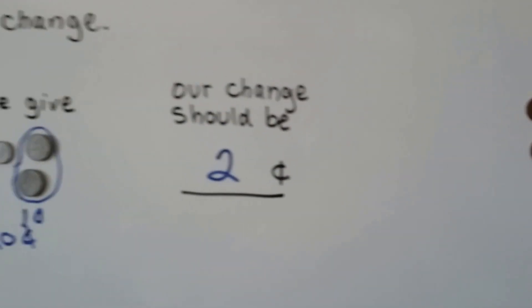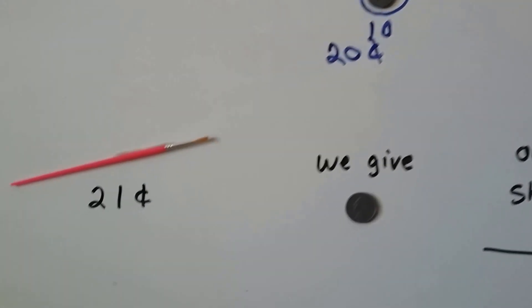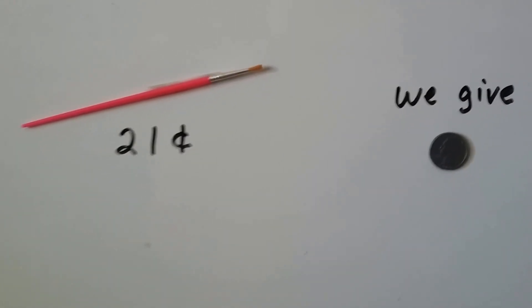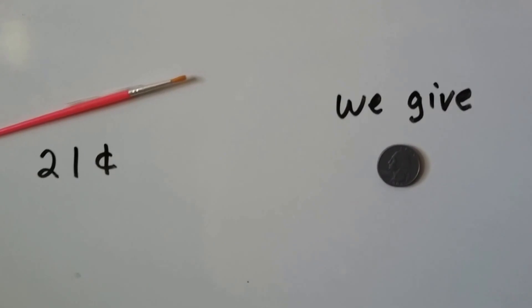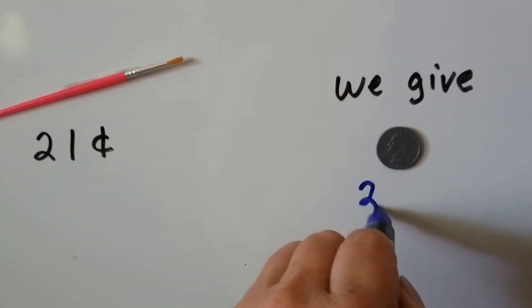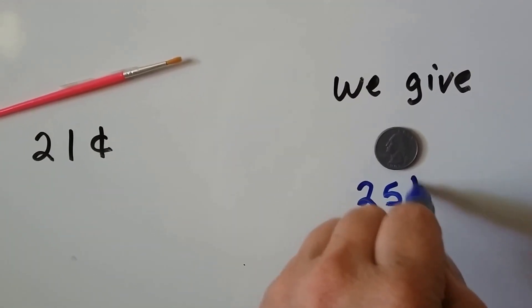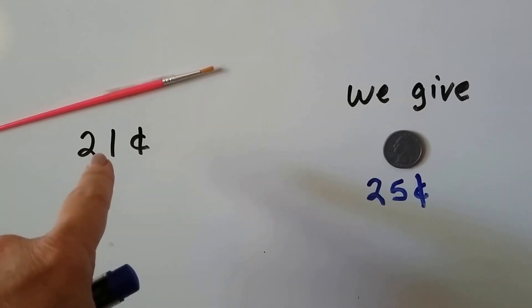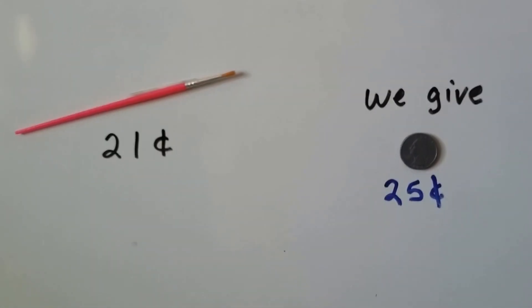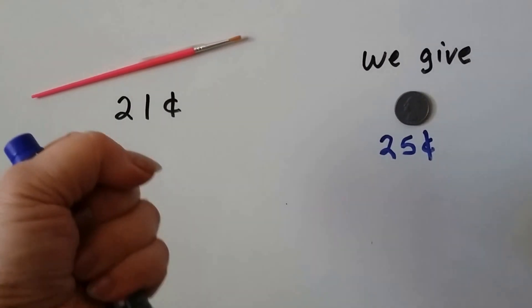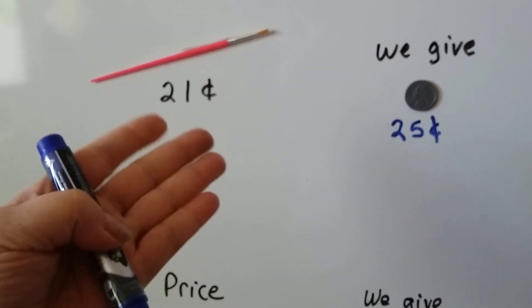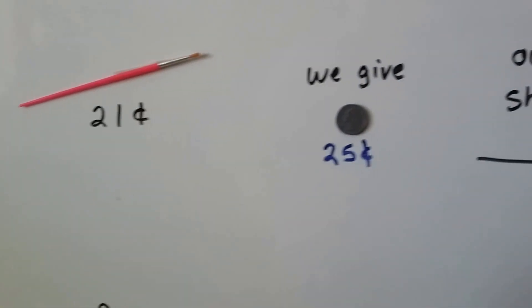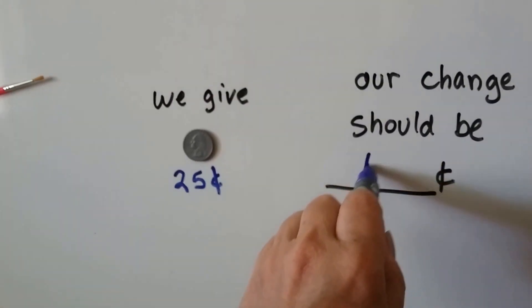Okay, if we want to buy a paintbrush and they're 21 cents, and we give the cashier a quarter, that quarter is 25 cents, isn't it? You start with the 21 and you count up to the 25: 21, 22, 23, 24, 25. Four. So the change should be four cents. We get four pennies back for our change.